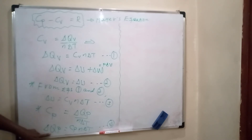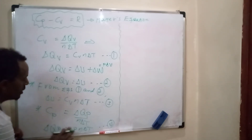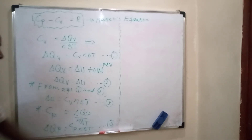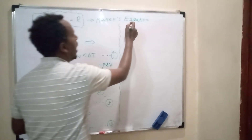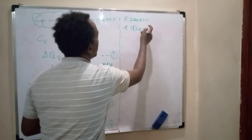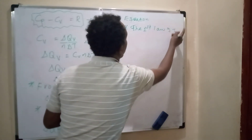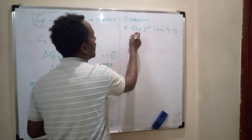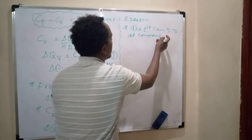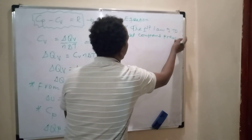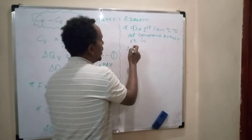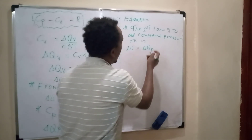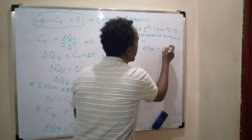Heat flow at constant pressure equals Cp times number of moles times change in temperature. The first law of thermodynamics at constant pressure is given as: ΔU = ΔQp − P · ΔV.